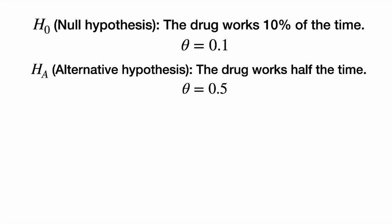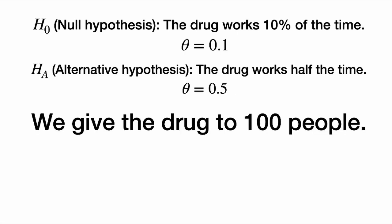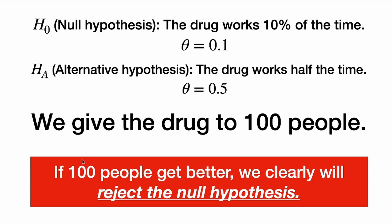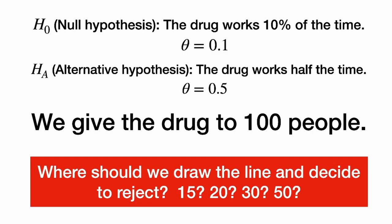Let's look at an example. Our null hypothesis is that the drug works 10% of the time — theta equals 0.1, this is the probability the drug works. The alternative hypothesis is that the drug works half the time, theta equals 0.5. We give the drug to 100 people. If 0 to 10 people get better, that's consistent with the null hypothesis and we would clearly fail to reject. If all people got better, the null is clearly false and we would reject it. But where should we draw the line?